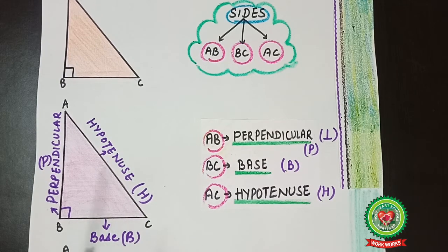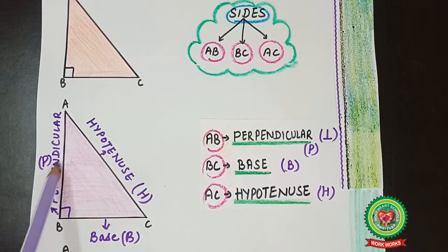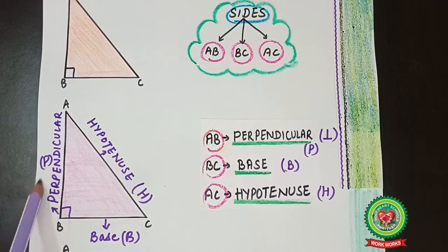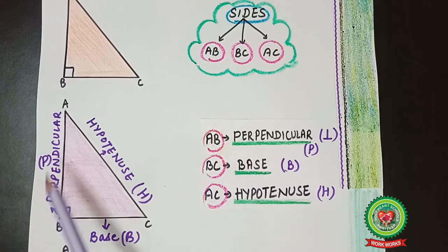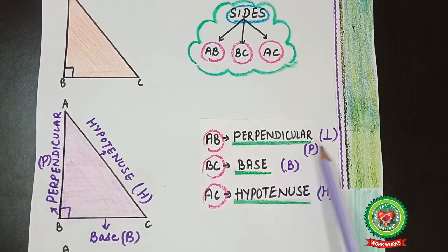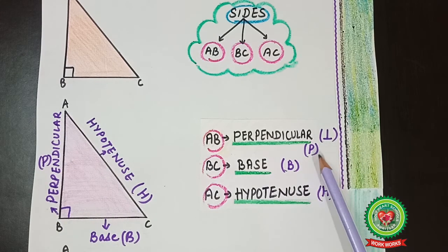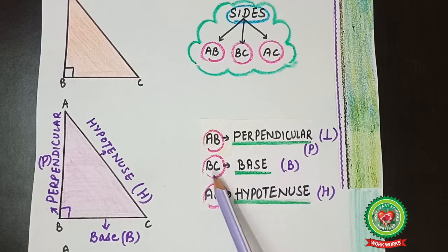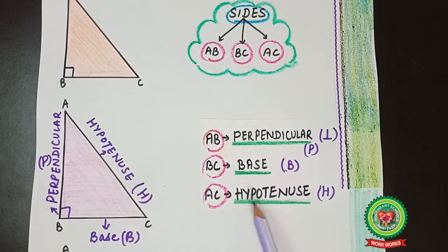The BC side can be written as base and denoted by capital B. AB is the perpendicular and can be denoted by capital P. So to summarize: AB is perpendicular denoted by capital P, BC is base denoted by capital B, and AC is the hypotenuse denoted by capital H.